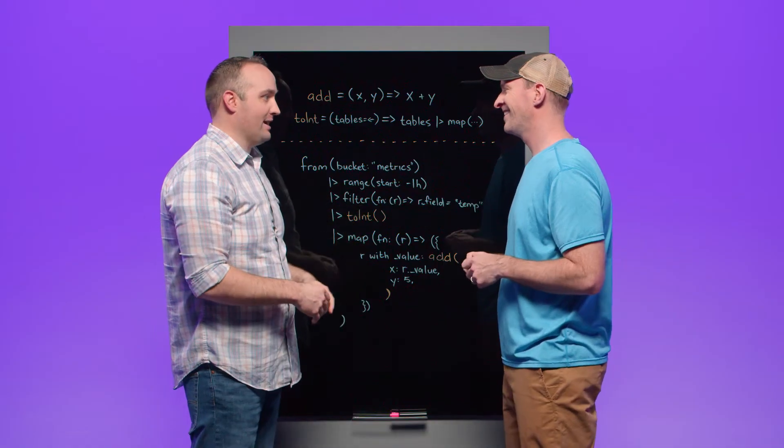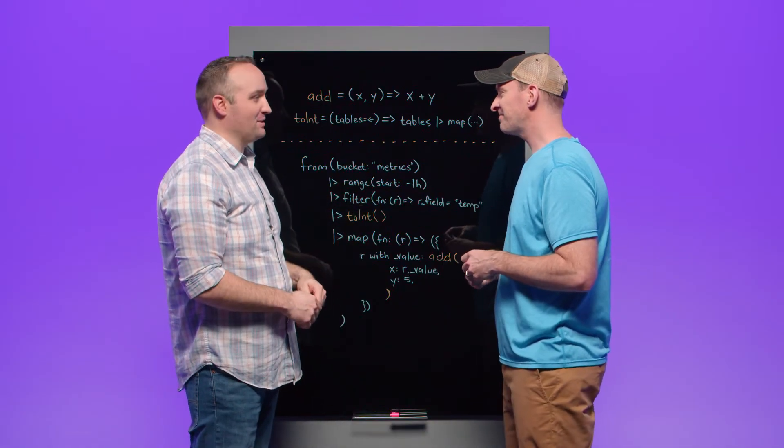So what functions are available in Flux? So there are currently between 400 and 500 functions in the Flux standard library. I'd love to list them all, but I don't think that would be really valuable for anyone's time. Wouldn't be engaging video? No, I don't think so. Probably the best place to find out what functions exist is either in the Flux documentation or even the Flux source code where all the functions are defined and documented. There's also some abbreviated documentation inside of the InfluxDB OSS and InfluxDB cloud user interface.